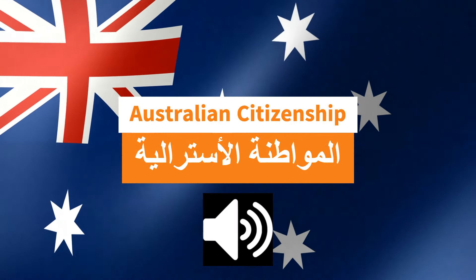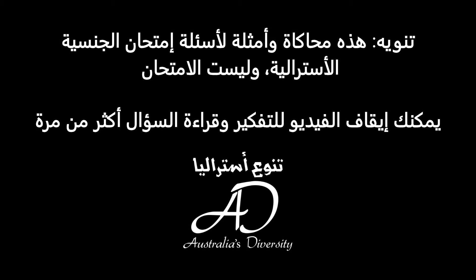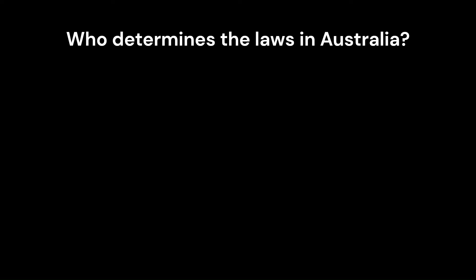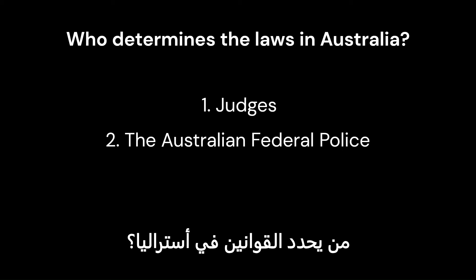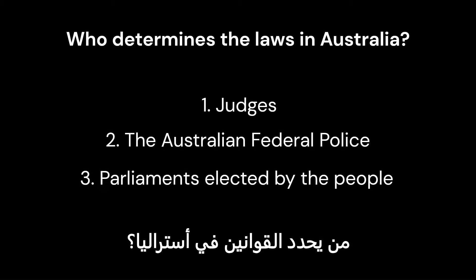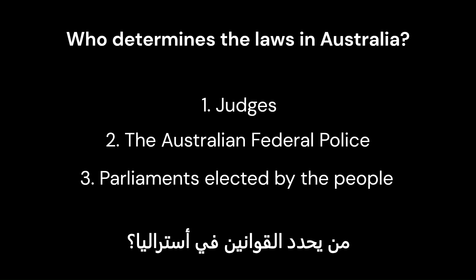Australian citizenship. Who determines the laws in Australia? 1. Judges. 2. The Australian Federal Police. 3. Parliaments elected by the people. Exactly, that is right. 3. Parliaments elected by the people.